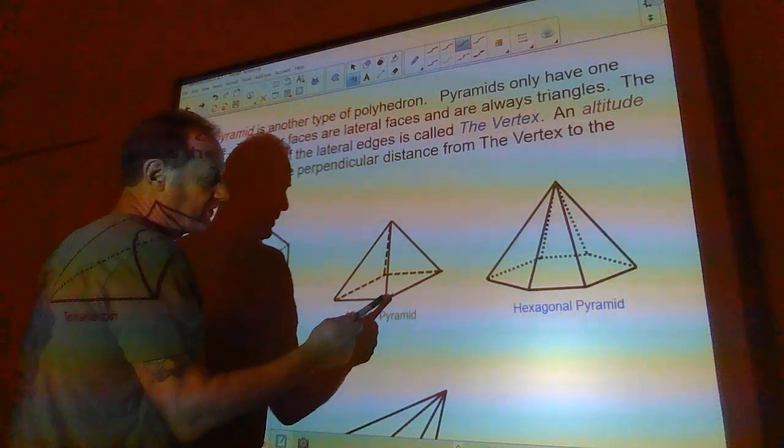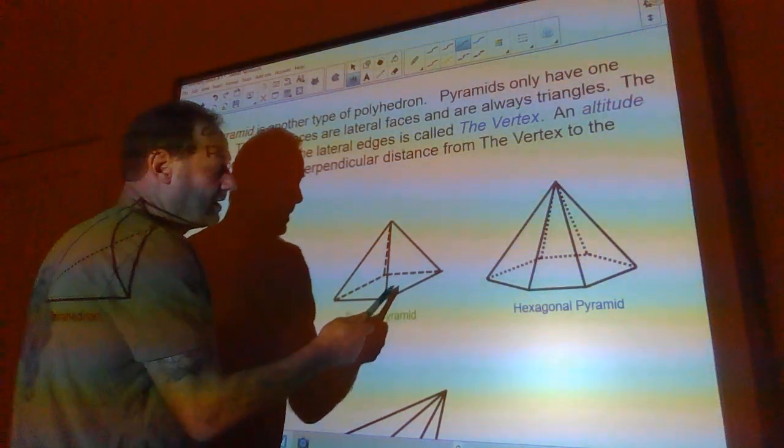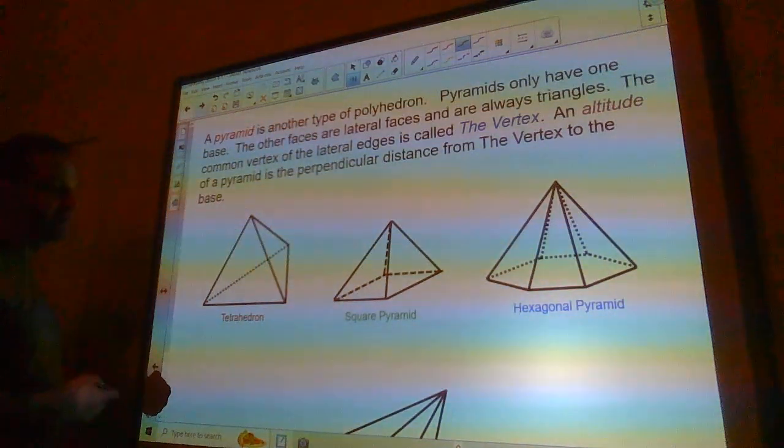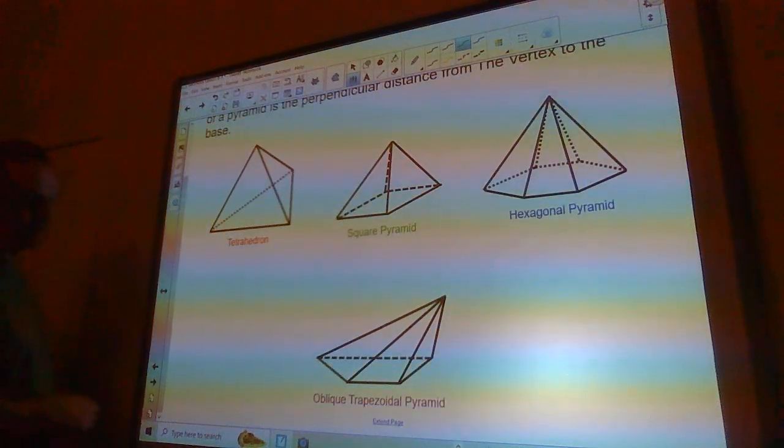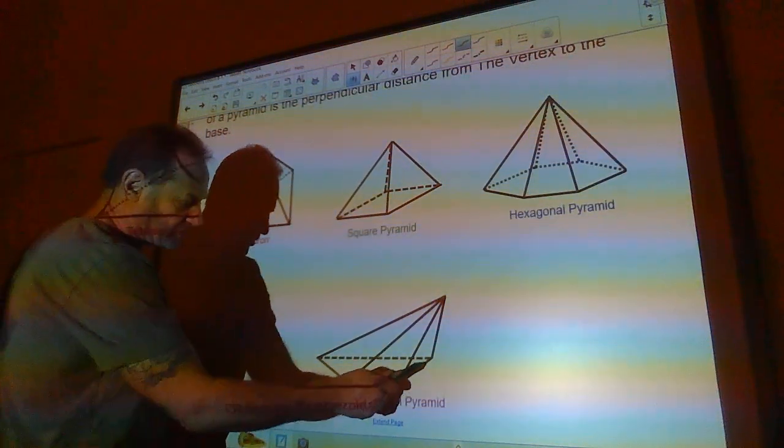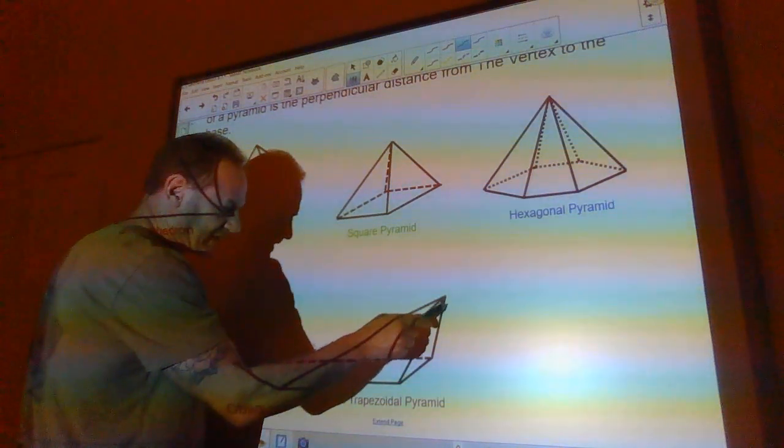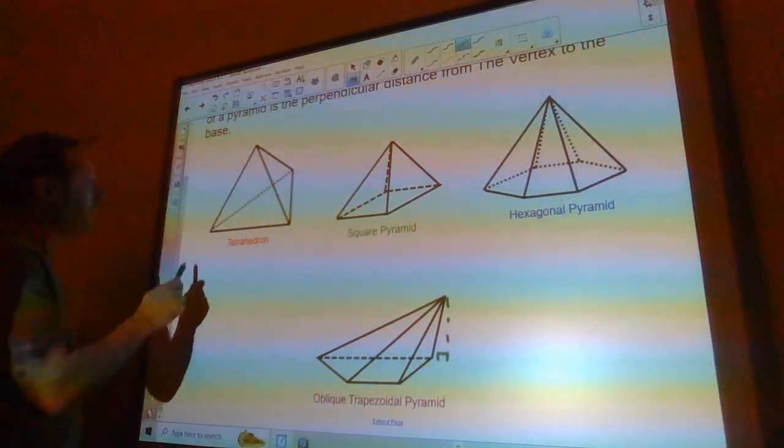This one, there's only one side that is not a triangle. That's the square. And so that's the base here. It's a hexagon. So that's the base. The hexagon is the base. This is an oblique trapezoidal pyramid because the base is a trapezoid. It's leaning to one side so it's got an altitude that's out here like this.